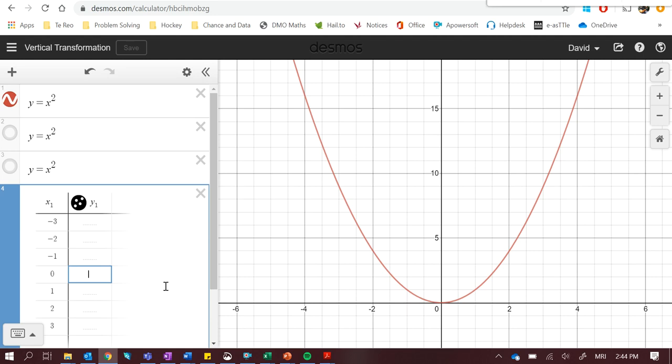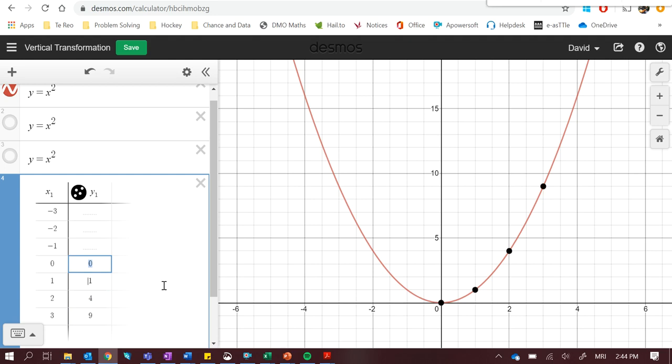So when x equals 0, y is 0. 1 is 1, 2 squared is 4, 3 squared is 9, and we're going to have the opposite the other way, 4 and 9. There we go. Okay, so this is our basic x squared parabola, making sure we know these squared numbers really well: 0, 1, 4, and 9.